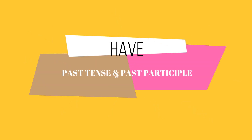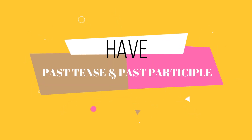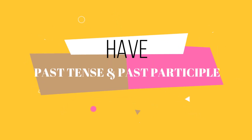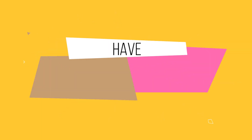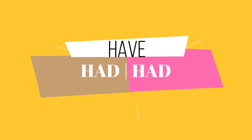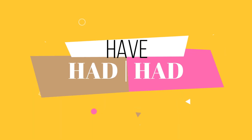What is the Past Tense and Past Participle of the verb 'have'? You're right! The Past Tense of 'have' is 'had' and the Past Participle of 'have' is also 'had.'